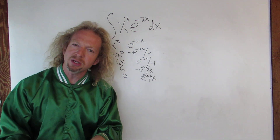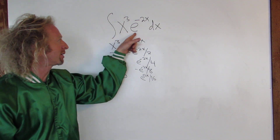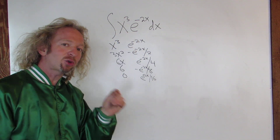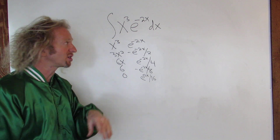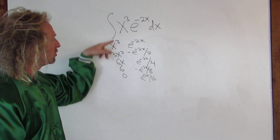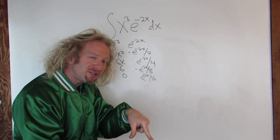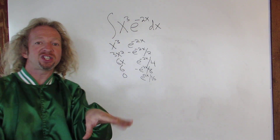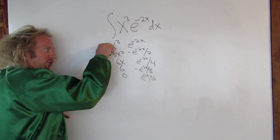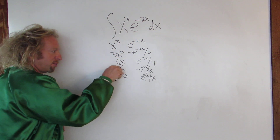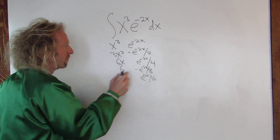So again, tabular: when do you use it and how? Whenever you have x to a power times an e, x to a power times a sine, or x to a power times a cosine. You pick the one that after repeated differentiation is eventually 0, and you just differentiate — boom, boom, boom, boom. Then you integrate — boom, boom, boom, boom.